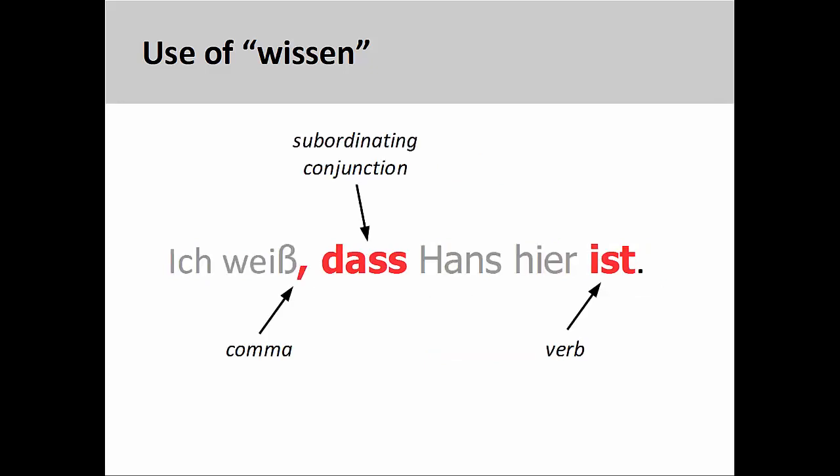A good tip to know is that the verb Wissen often launches a subordinate clause. A subordinate clause begins with a subordinating conjunction and is set off from the lead sentence by a comma. The verb always comes at the end of the clause. We will discuss subordinate clauses in a later presentation.